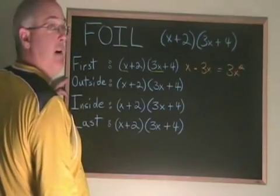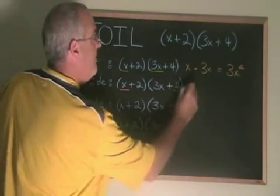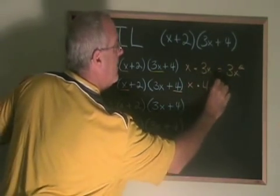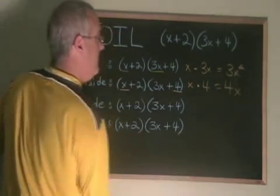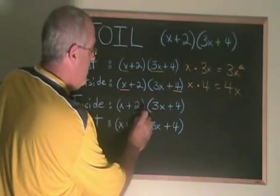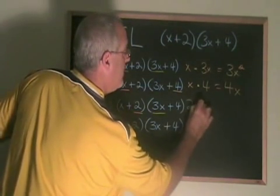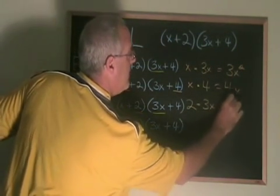Then outside. The outside terms are the x here and the 4 there. x times 4 equals 4x. The inside terms are the 2 and the 3x. 2 times 3x equals 6x.